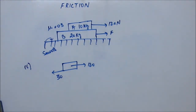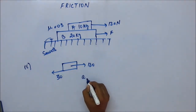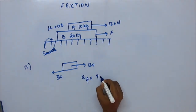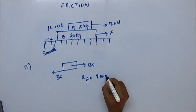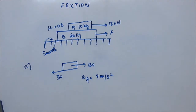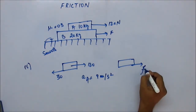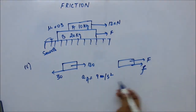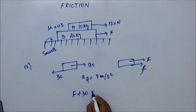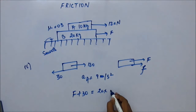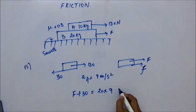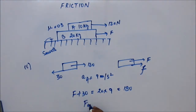For minimum force the frictional force should be maximum, equal to 30 N. This gives us the acceleration of A as 9 m/s², and the acceleration of B should also be 9 m/s² if slipping has stopped. As per the FBD of B, frictional force is in the forward direction and external force is also in the forward direction, so F plus 30 equals mass 20 into acceleration, giving minimum force as 150 Newton.